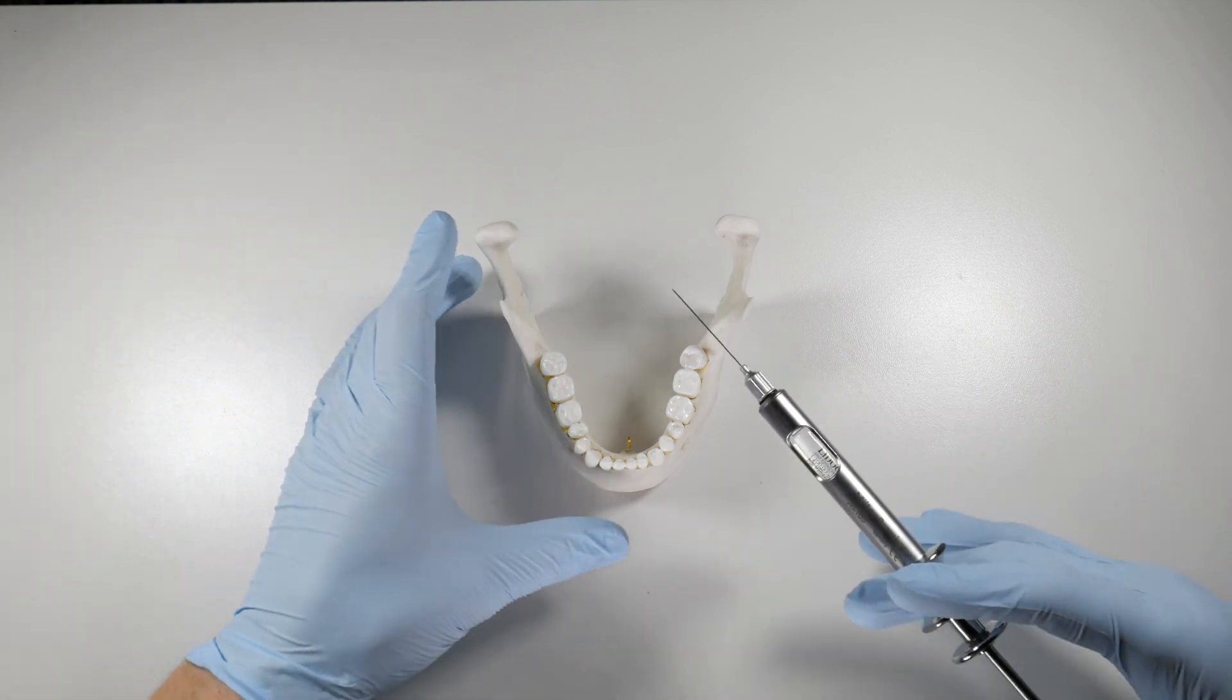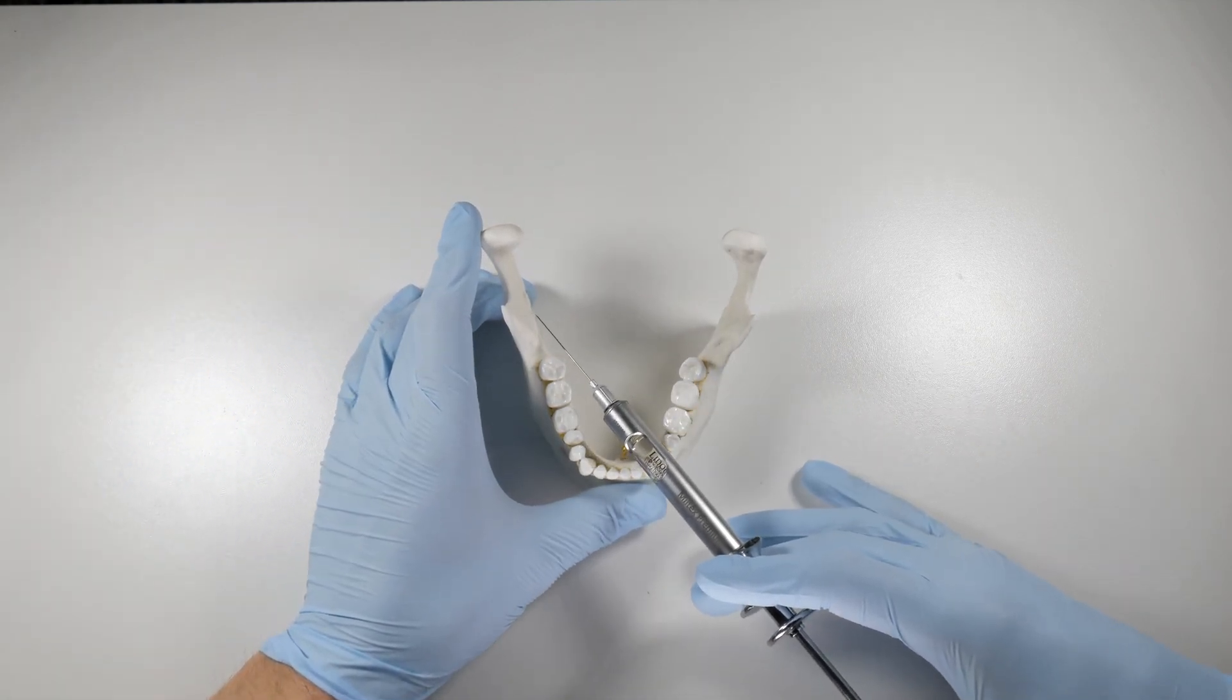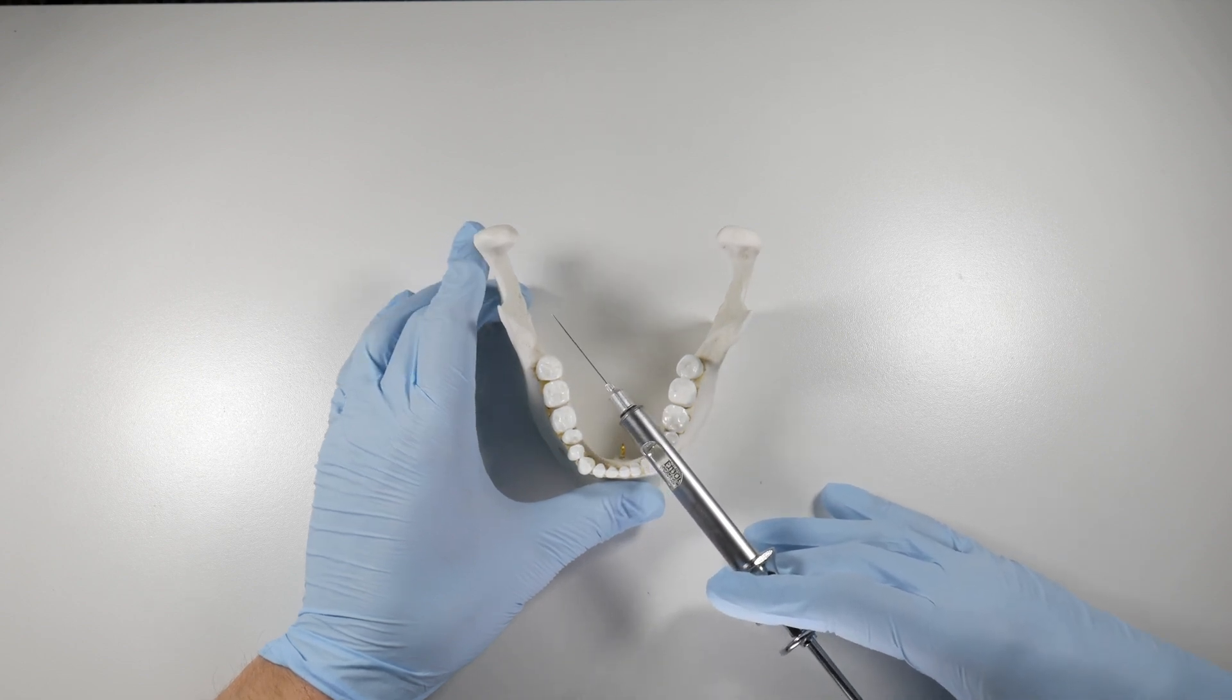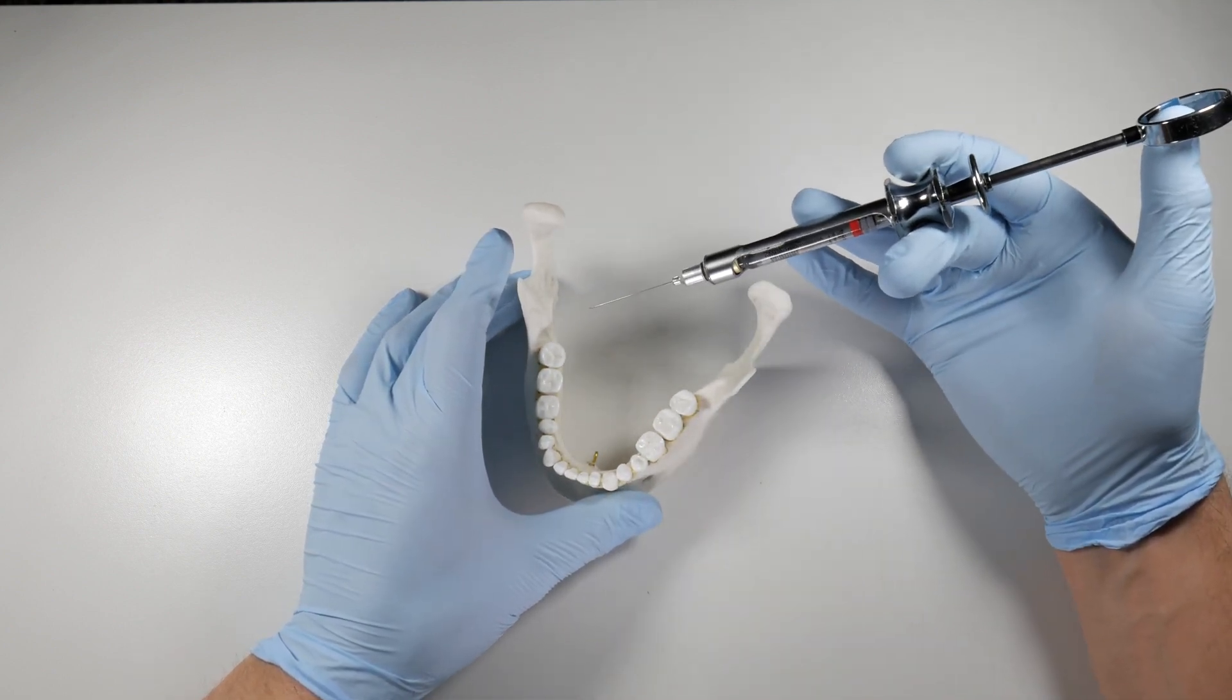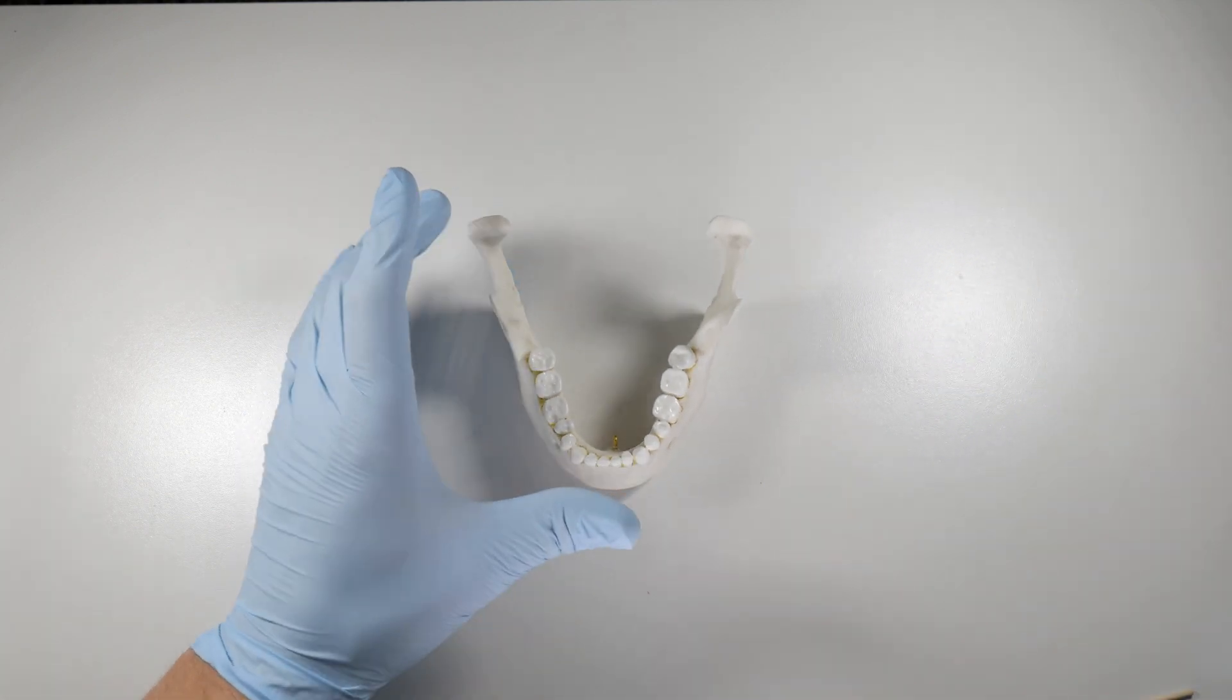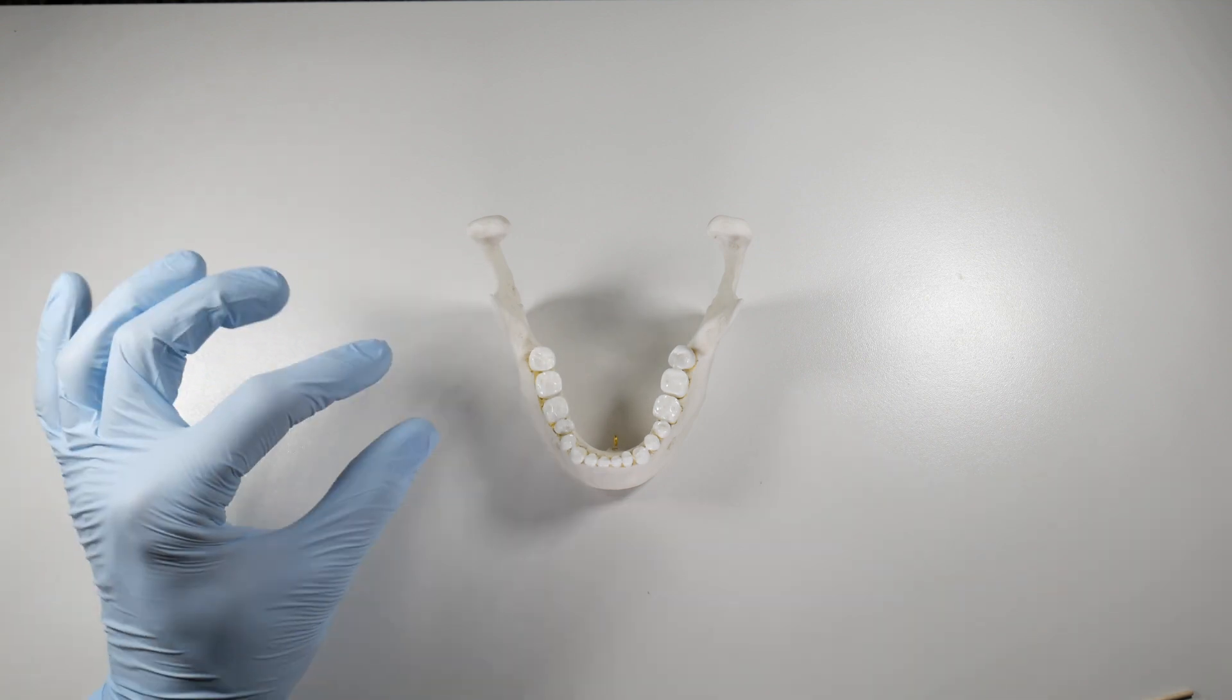Another common cause for missing this injection is the sphenomandibular ligament, which connects to the lingula here. If you don't hit bone when you're injecting, it's possible to be medial to this ligament. If you deposit there, the ligament acts as a barrier for the anesthetic to work its way laterally into the foramen. So that can be a reason that you miss your block if you're not contacting bone. Make sure that you're hitting bone at the appropriate depth.